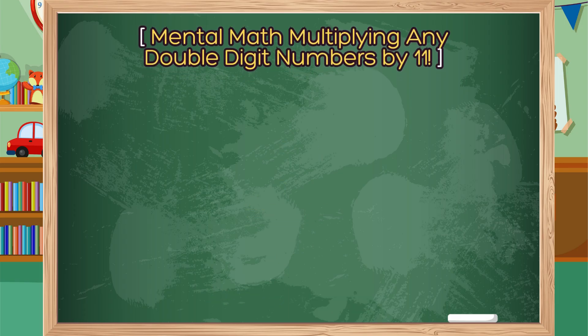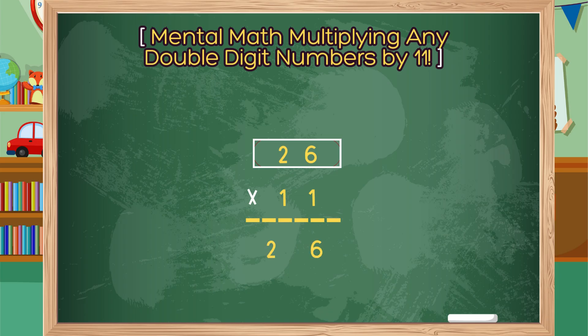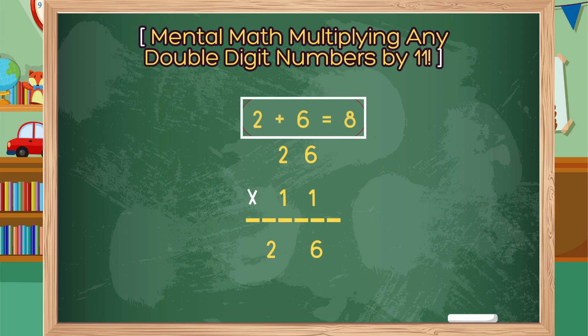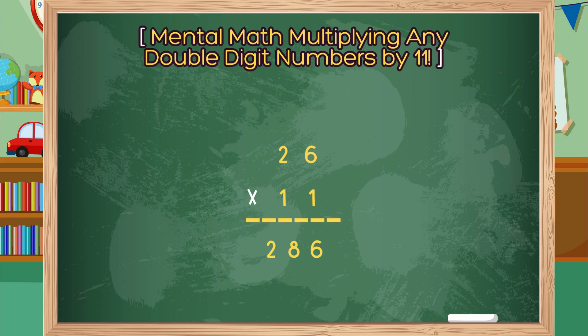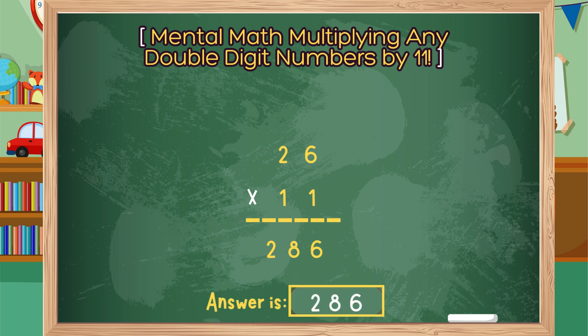Let's try another. 26 times 11. Step 1: Separate the digits of 26 and place them in the product area. Step 2: Add the digits 2 and 6 together, which equals 8. Step 3: Insert the 8 into the sum between the 2 and the 6 in the product. Your answer is 286.